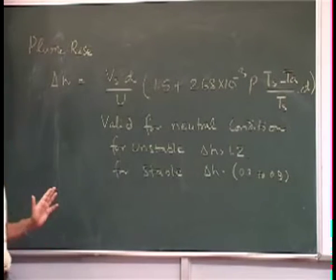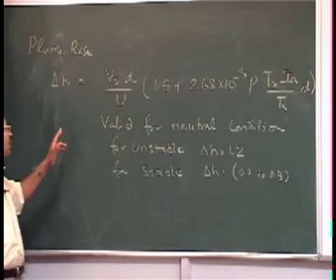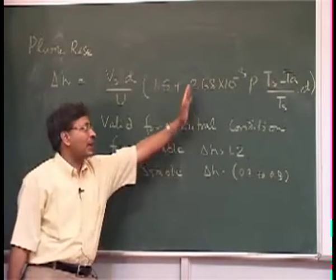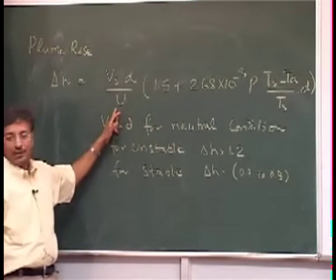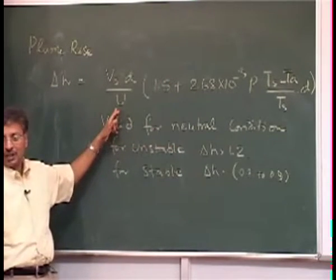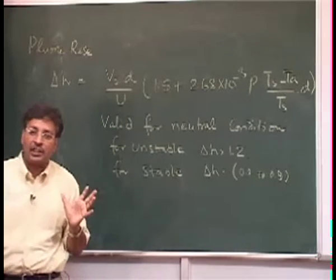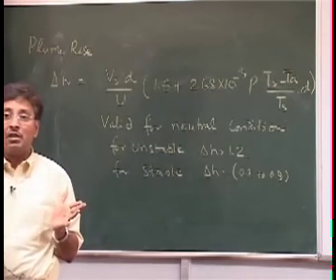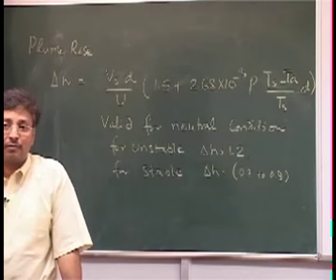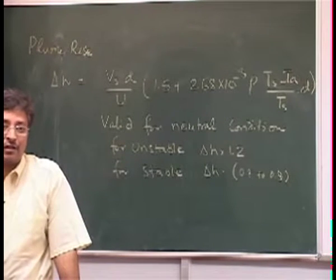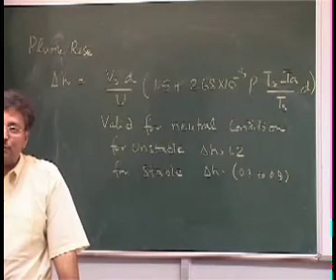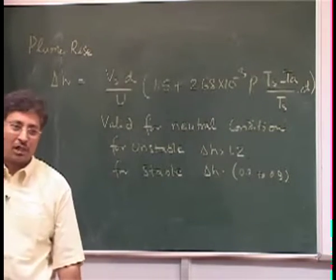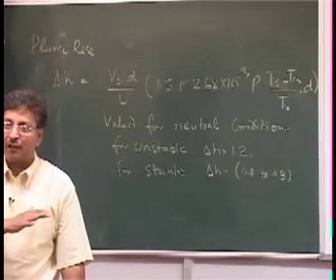The trick here is that my delta H for given conditions — some I can manipulate, but the wind I cannot. Delta H will be inversely proportional to the wind speed. More is the wind speed, it means the plume will not be able to rise too much — it will be forced down somehow.